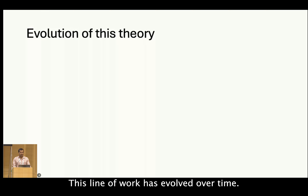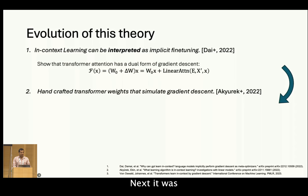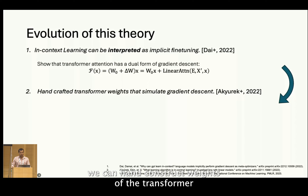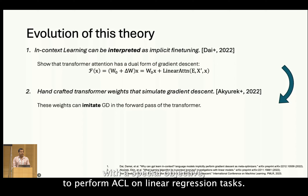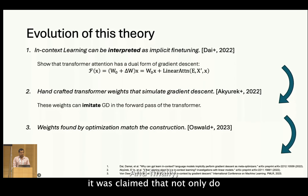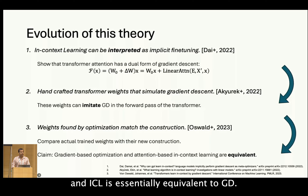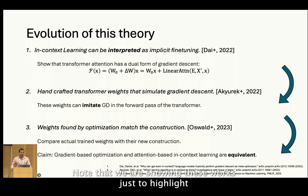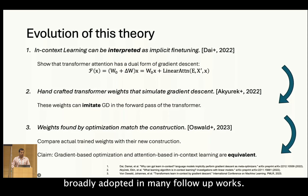This line of work has evolved over time. It started with an interpretation of transformer attention as a dual form of gradient descent. Next, it was shown that if inputs are presented in a certain format, we can hand-construct weights of the transformer that would simulate a step of gradient descent in the forward pass. They trained these transformers with a special objective to perform ICL on linear regression tasks. Finally, it was claimed that not only do these weights exist, but trained transformers actually mimic gradient descent, and ICL is essentially equivalent to GD. Note that we are showing these works just to highlight some of the original ideas, but their setup is now broadly adopted in many follow-up works.